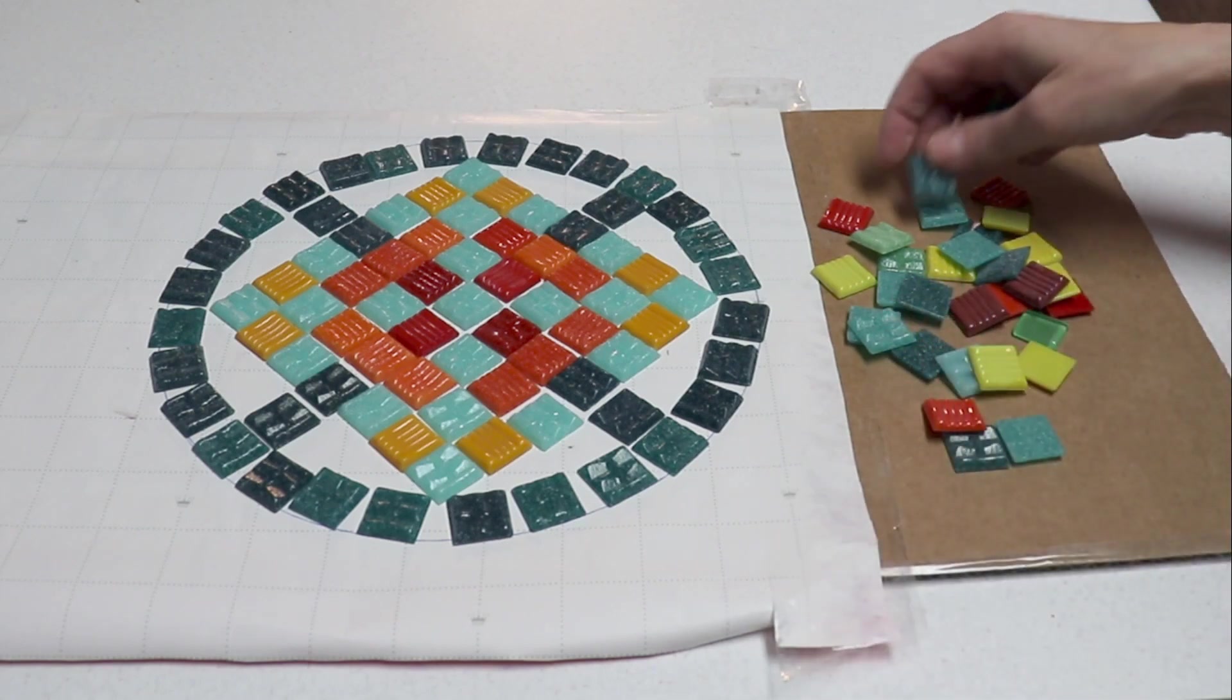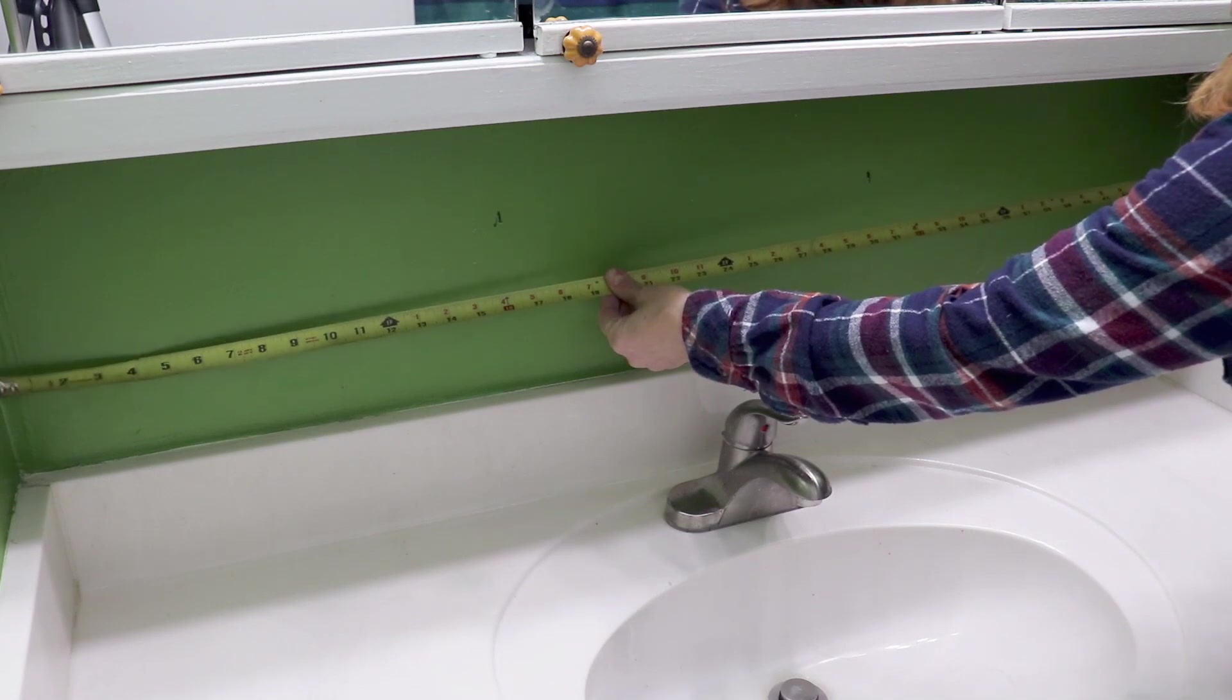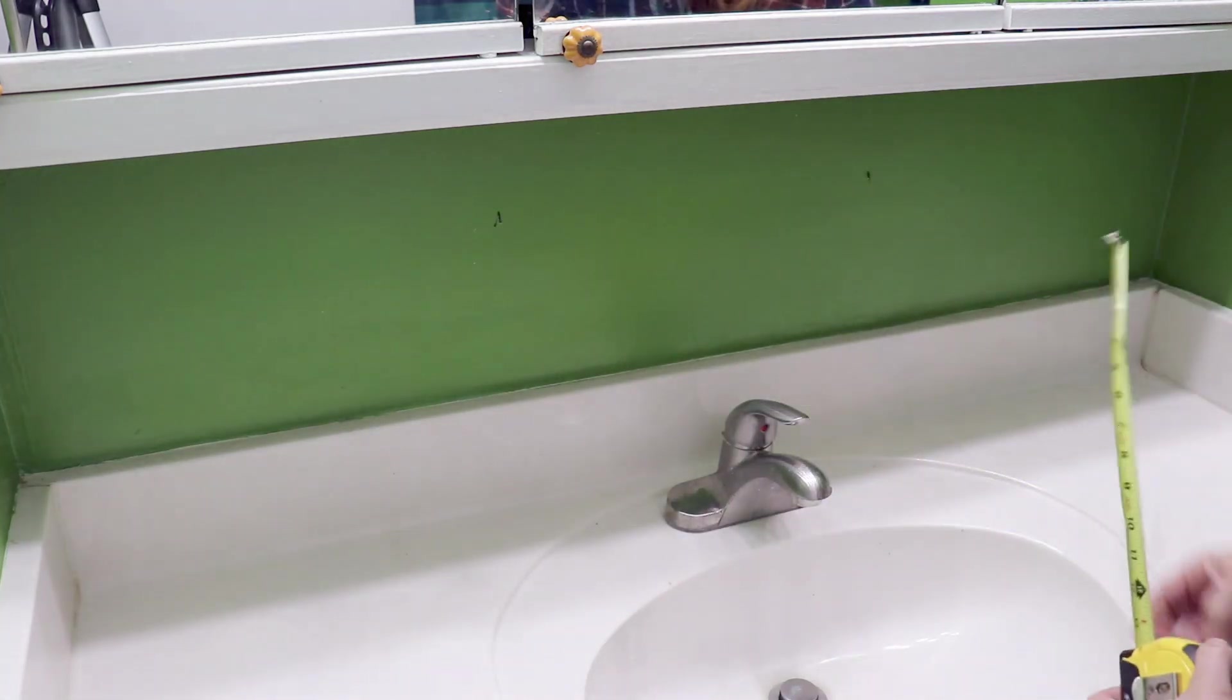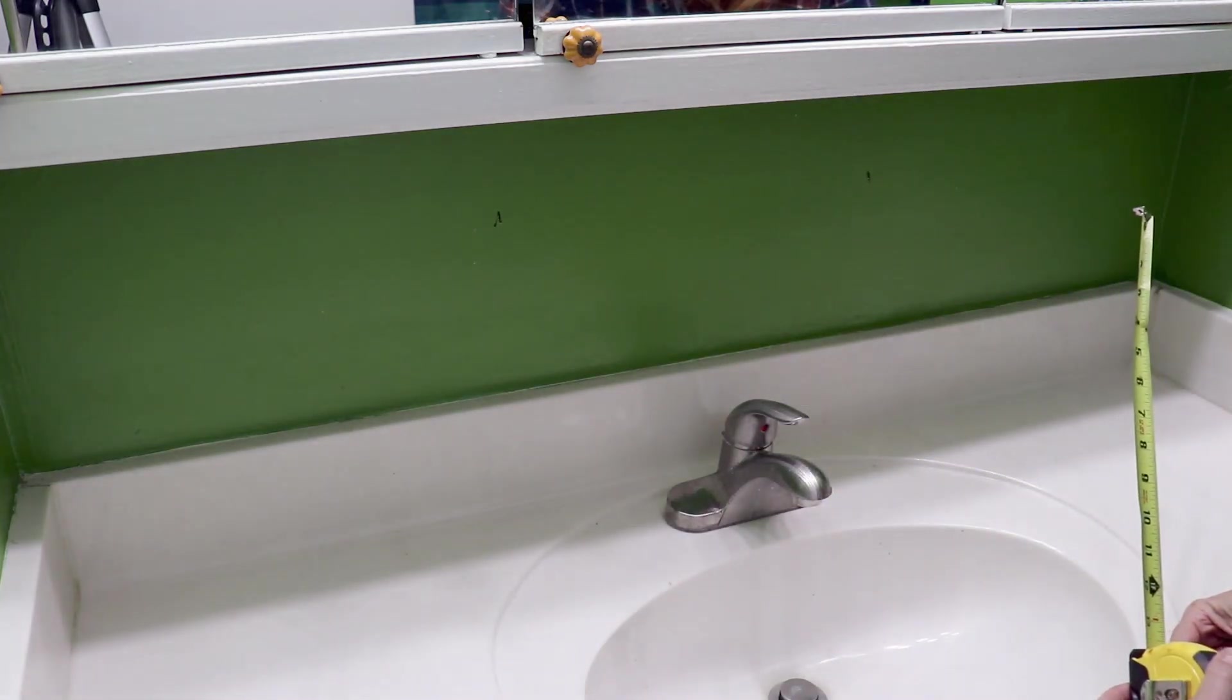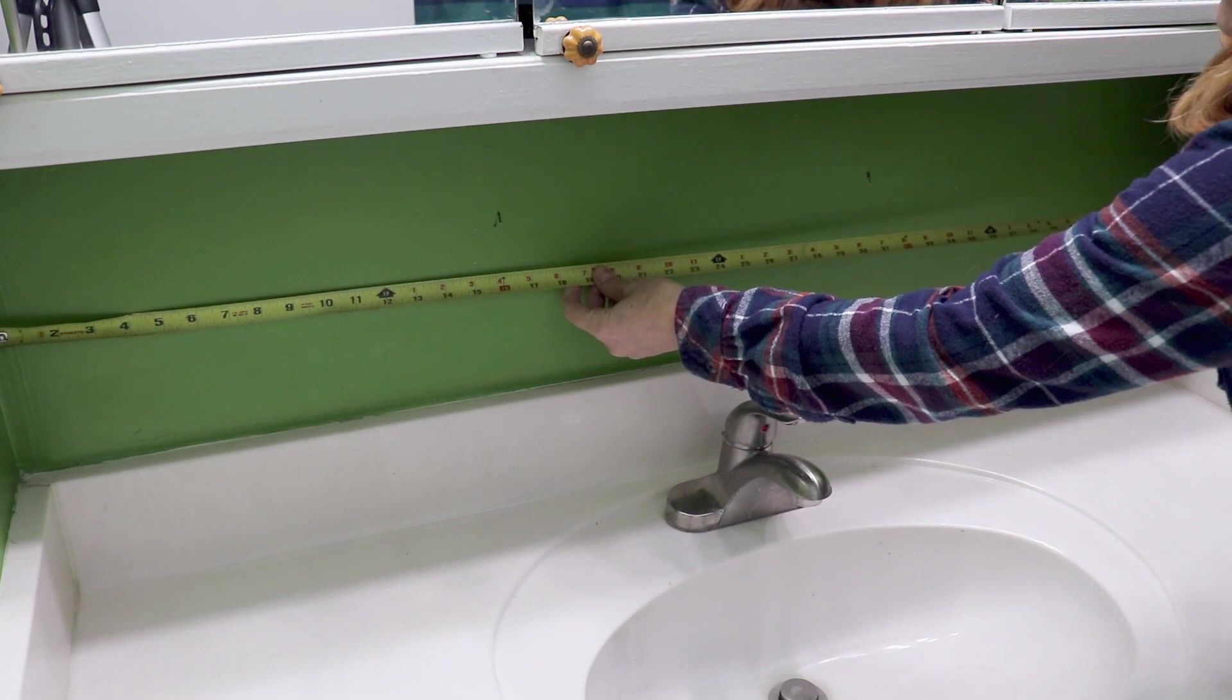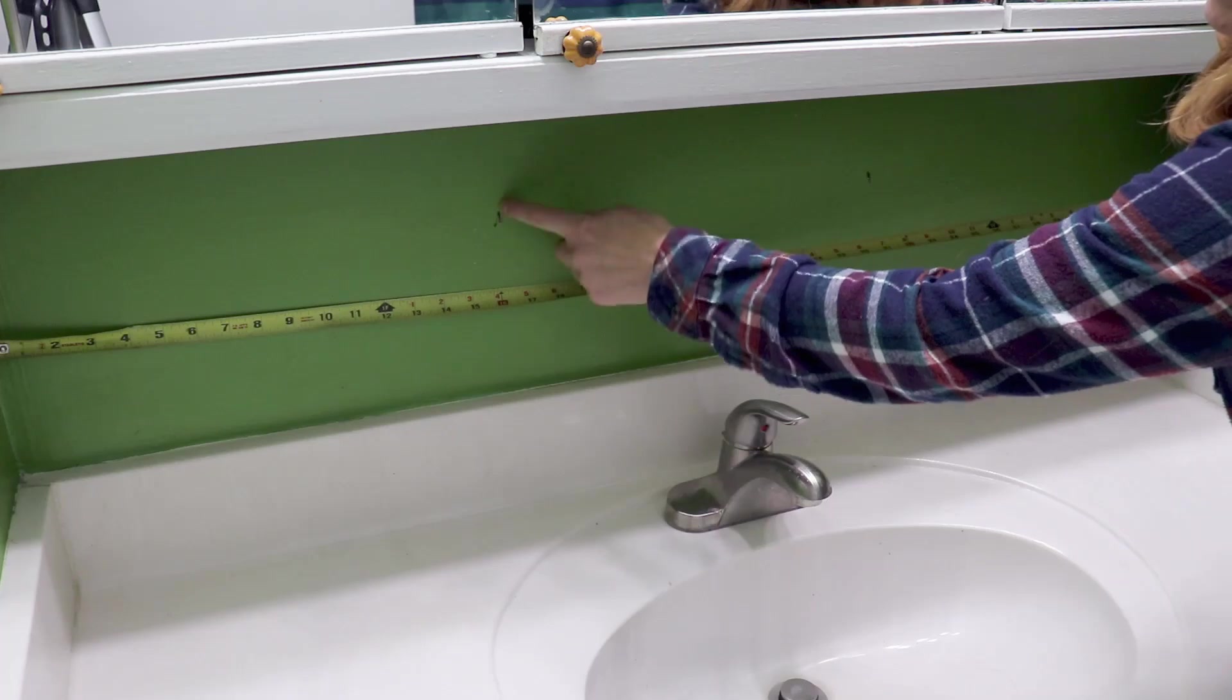The next step is to decide where you want to put your mosaic and measure the area. It's handy if the location is bounded by cabinets, the countertop and walls so the mosaic has a natural frame. If the area doesn't have a built-in frame you might want to make one using some wood molding. When you're measuring, take the time to mark the location of the studs. Studs are placed about every 16 inches from the edge of the wall.